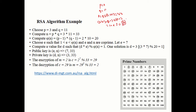We know phi(n) = 20, n = 33, and we have P and Q. We choose E. E must be a prime number. Looking at a table of primes from 1 to 100, we choose E = 7.